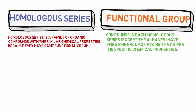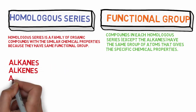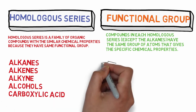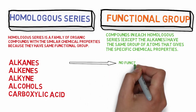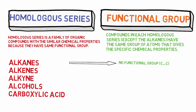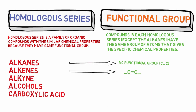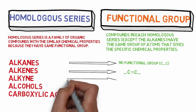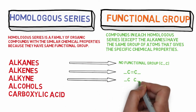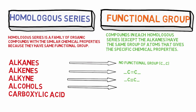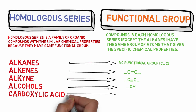The homologous series include alkanes, alkenes, alkynes, alcohols, and carboxylic acids. Alkanes have no functional group — only carbon-carbon single bonds. Alkenes have a carbon-carbon double bond as their functional group. Alkynes have a carbon-carbon triple bond. Alcohols always have a hydroxyl group, written as -OH. Carboxylic acids have the functional group -COOH.